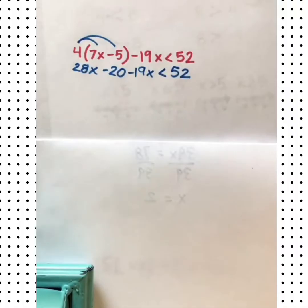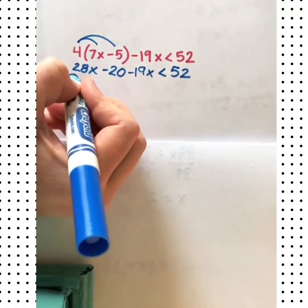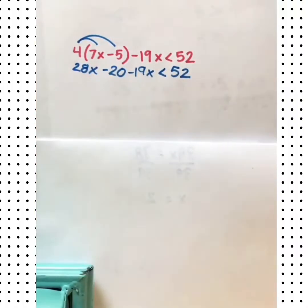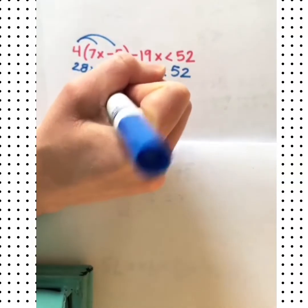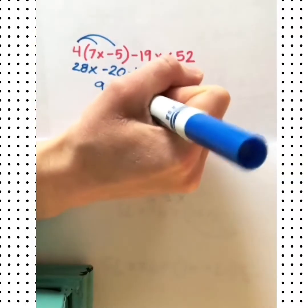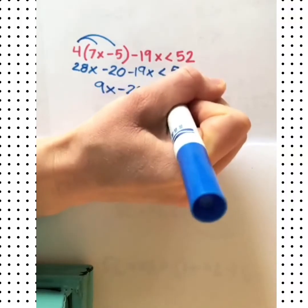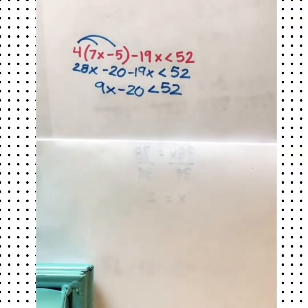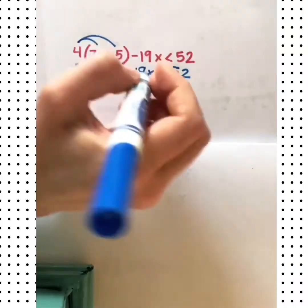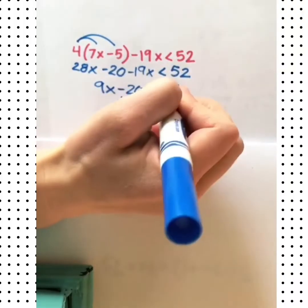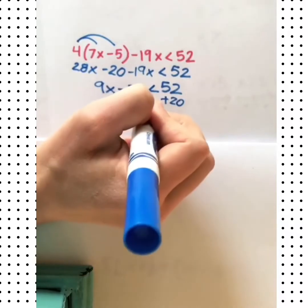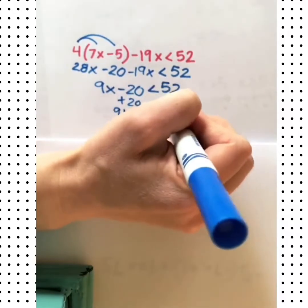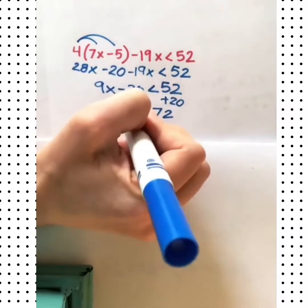Now we'll look for any like terms we can combine. We have a 28x and a negative 19x. Those combine to give us 9x, bring down our negative 20, still less than 52. Now we'll solve this with inverse operations, add 20 to both sides, 9x is less than 72, and then divide by 9.